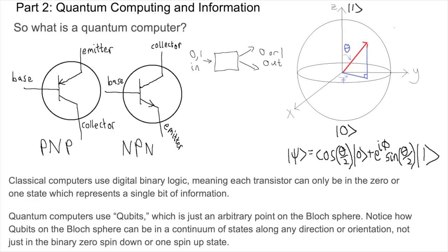So what is a quantum computer? Classical computers use digital binary logic, meaning each transistor can only be in the zero or one state, which represents a single bit of information.